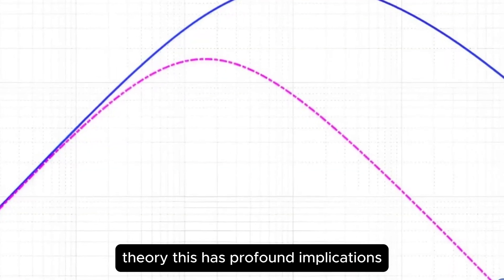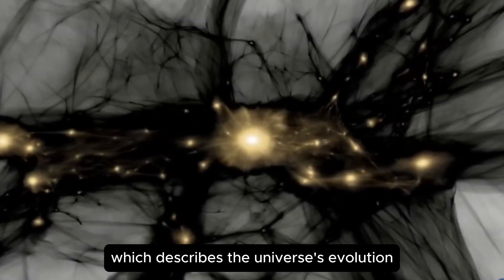These intriguing hints suggest that dark energy might not be constant at all, a finding that could upend decades of cosmological theory. This has profound implications.